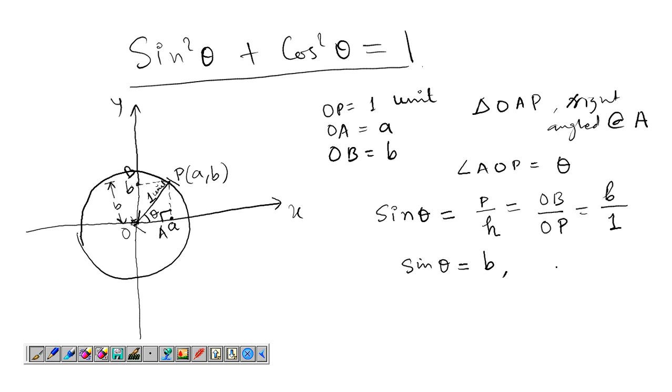Likewise cosθ is equal to a because cosθ is base upon hypotenuse and base is OA and hypotenuse is OP. OA is a and OP is 1 unit.